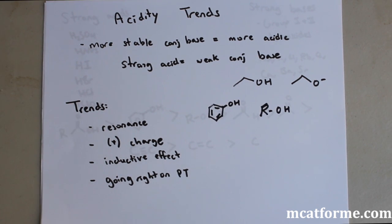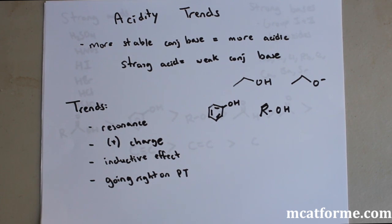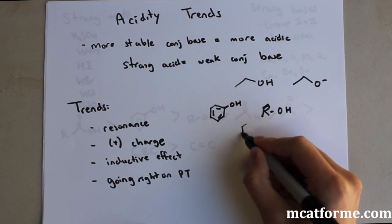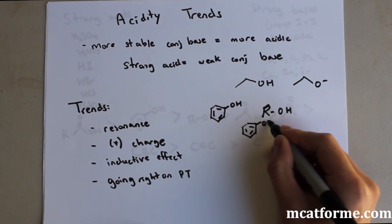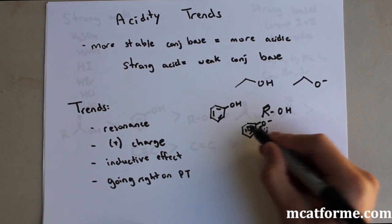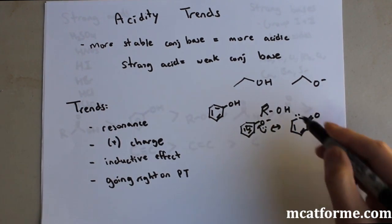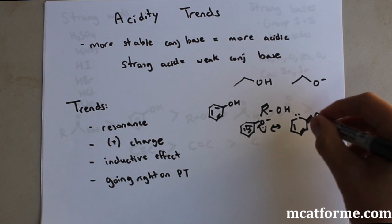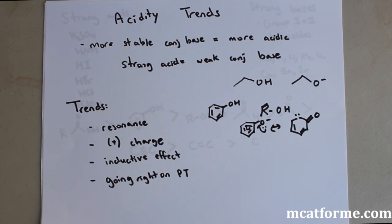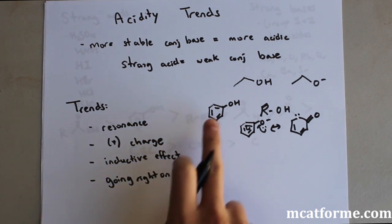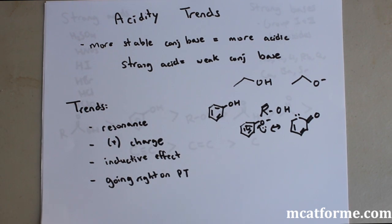For example, if we have phenol versus a plain alcohol, when we form the conjugate base we remove the hydrogen and get a negative charge on the oxygen. In phenol, those electrons on the oxygen can resonate into the ring — they come down, creating a double bond to oxygen, and the electrons spread into the other parts of the ring. In the plain alcohol there's no resonance structure, so the electrons can't move anywhere. Therefore, phenol is more acidic than the alcohol.